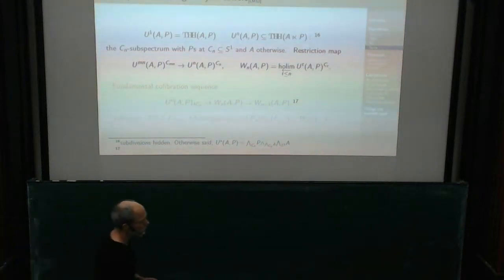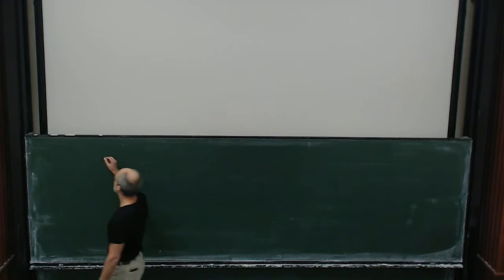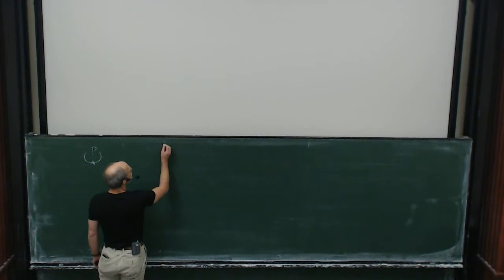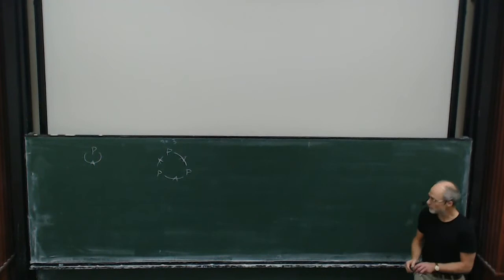So how should we think about this? Usually you have THH with coefficients in a bimodule P. And then you have P, and you tensor P with itself, with A's from both sides. When N is equal to 3, for instance, you put a P at each third root of unity, and you connect them by A's as you would. And that gives a nice C3 object.